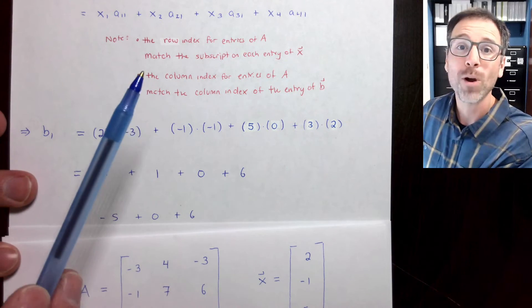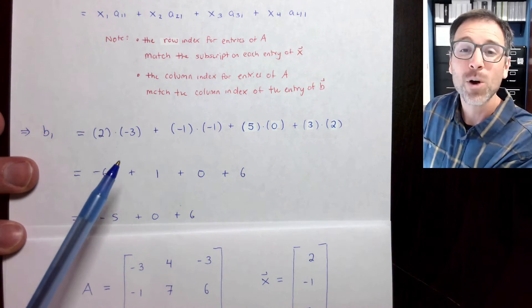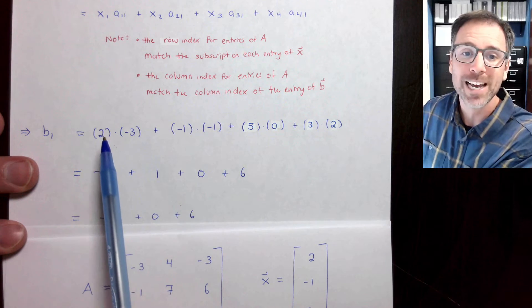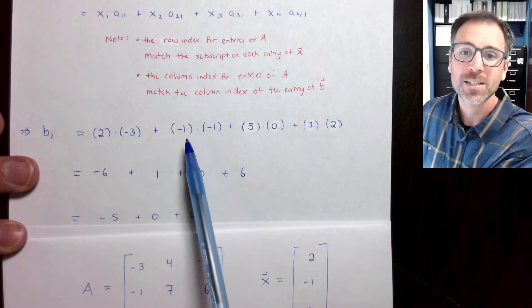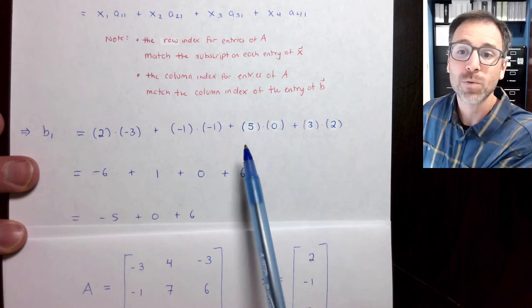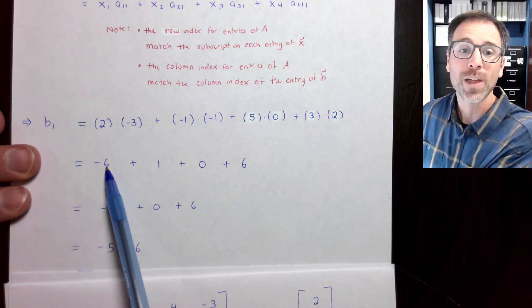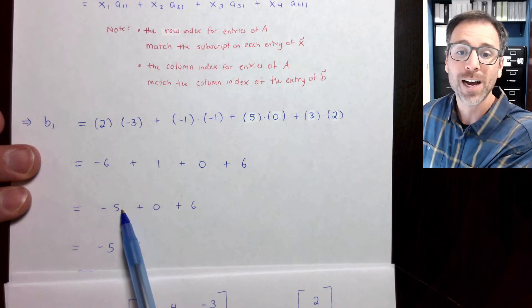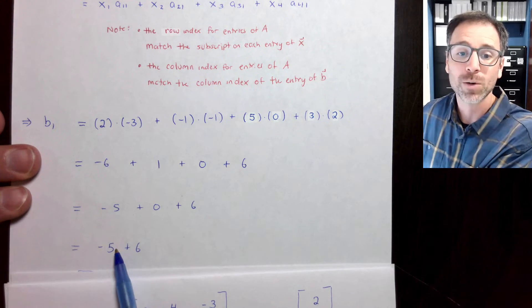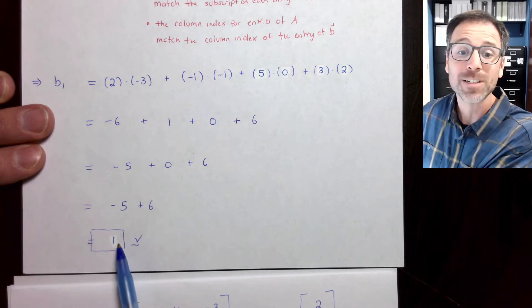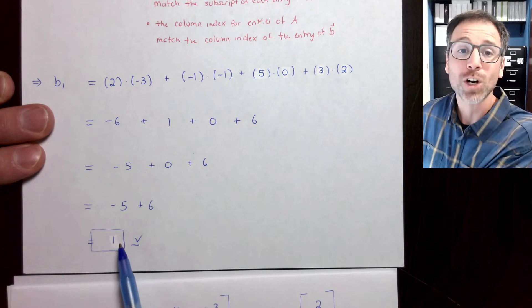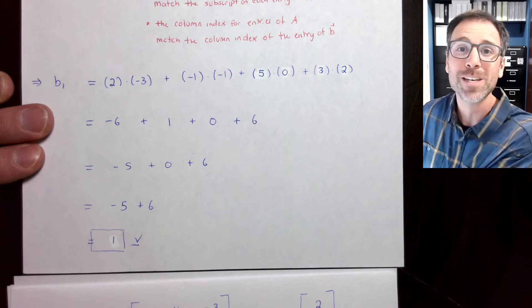We remember that the whole point of this example is to cement the definition, but we don't want to make a simple arithmetic error. So in this case, I'm just going to go step by step. 2 times negative 3 is negative 6. Negative 1 times negative 1 is positive 1. 5 times 0 is 0. 3 times 2 is 6. We know that negative 6 plus 1 is negative 5. We know that negative 5 plus 0 is negative 5, and negative 5 plus 6 is positive 1. Here's our guess of what we think the first entry of b should be.